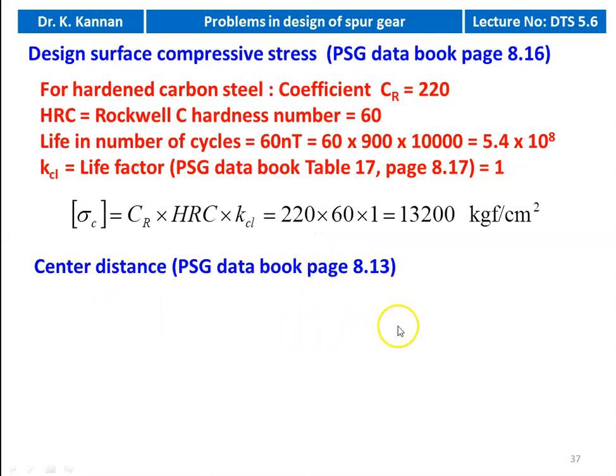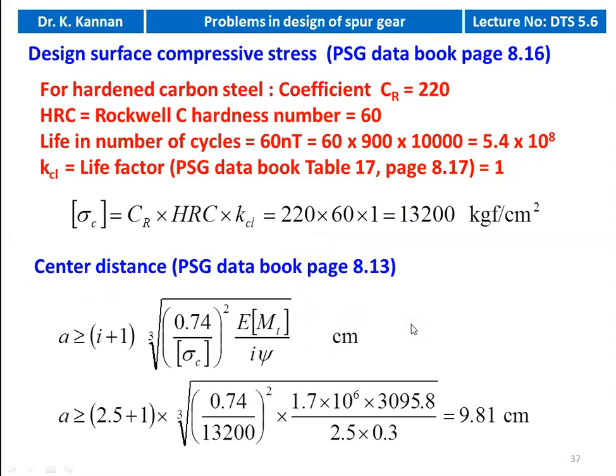We calculate the center distance from the equation on page number 8.13: A ≥ (I + 1) × ∛[0.74 / σC² × E × MT / (I × ψ)]. Substituting numerical values: A ≥ (2.5 + 1) × ∛[0.74 / 13,200² × 1.7 × 10⁶ × 3095.8 / (2.5 × 0.3)]. The center distance A ≥ 9.81 cm.